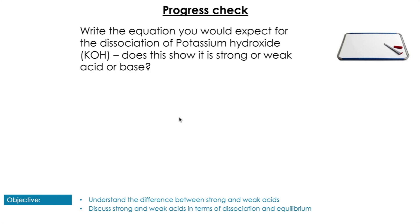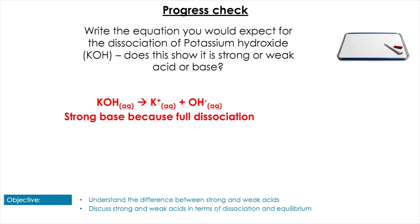Next question: write the equation for the dissociation of potassium hydroxide and comment on how this equation shows if it's strong or weak. Pause the video if you need some time. Pop them up. Hopefully you got the equation here, but you also mentioned how that arrow indicates complete dissociation. That's what we're really looking for here.